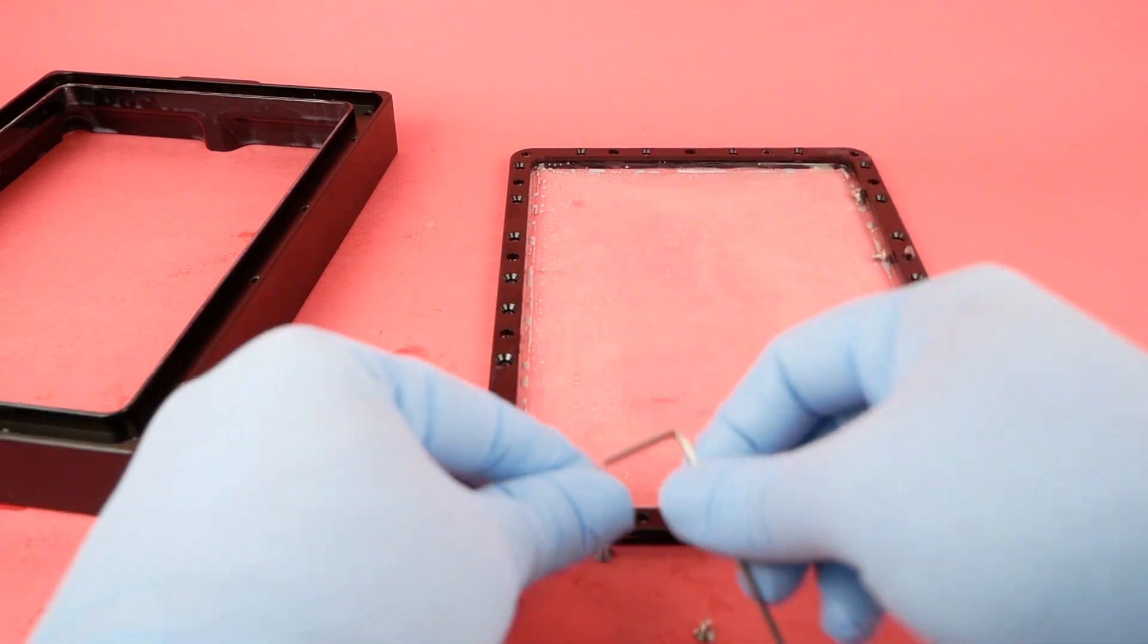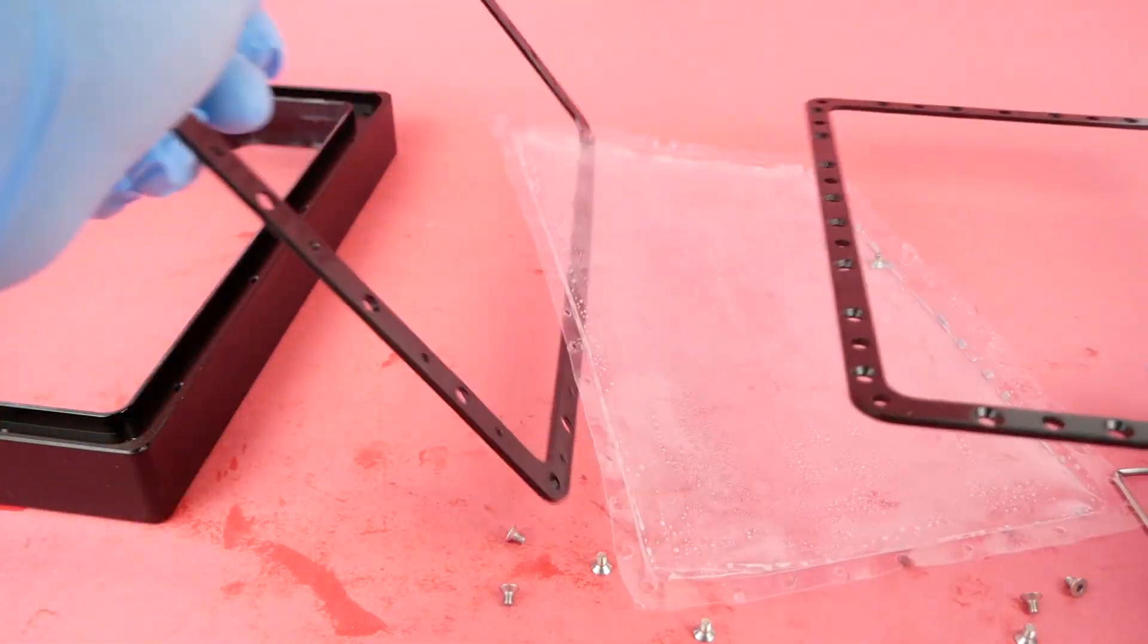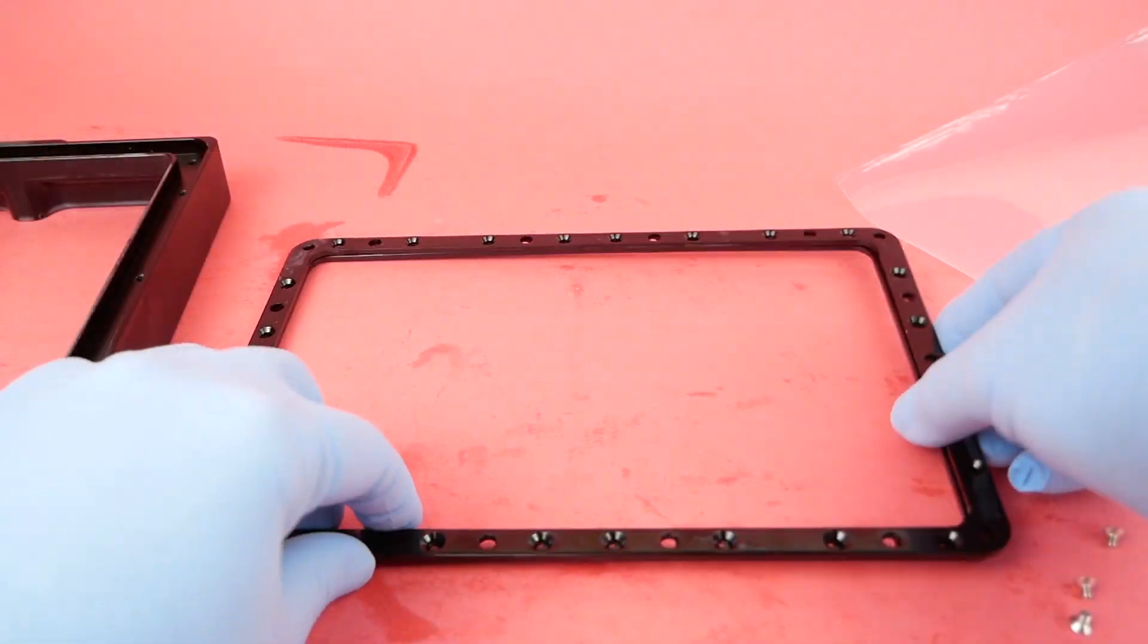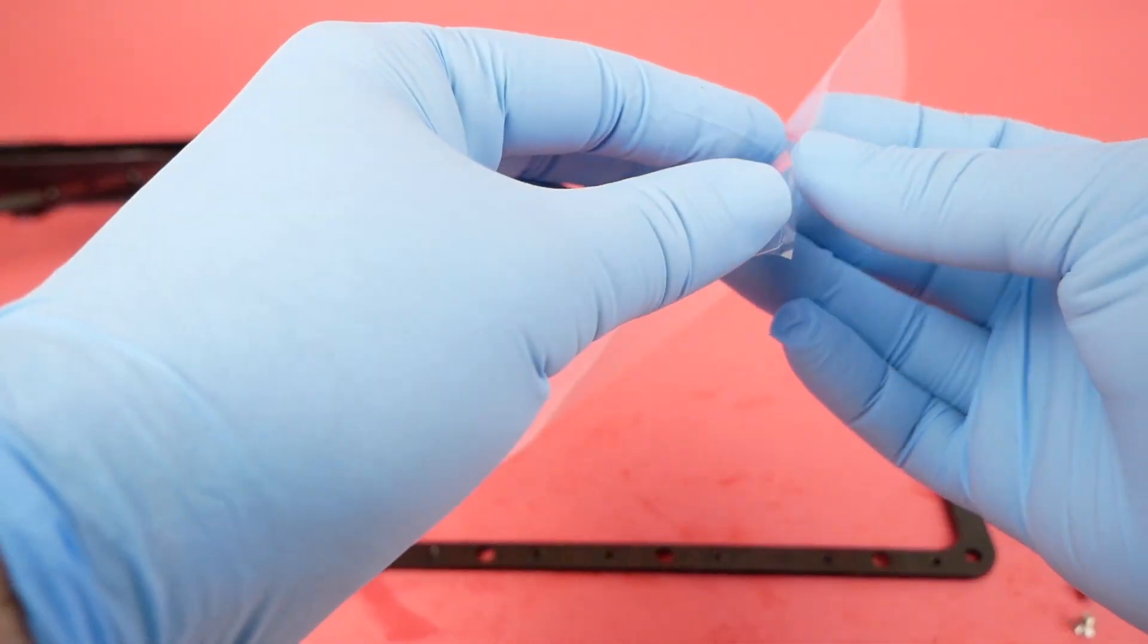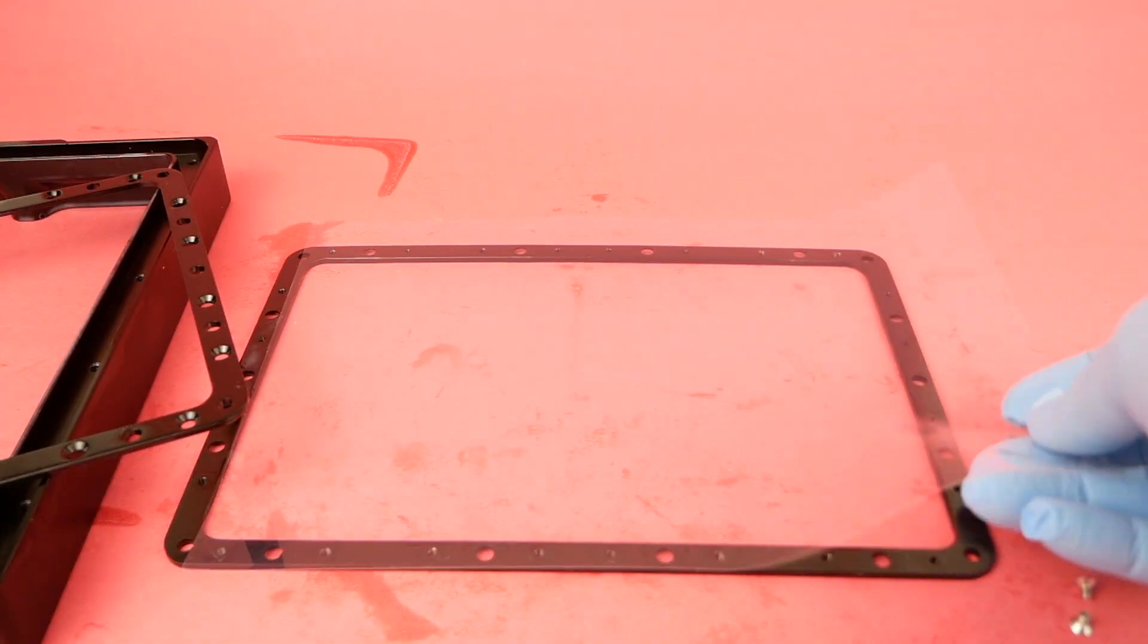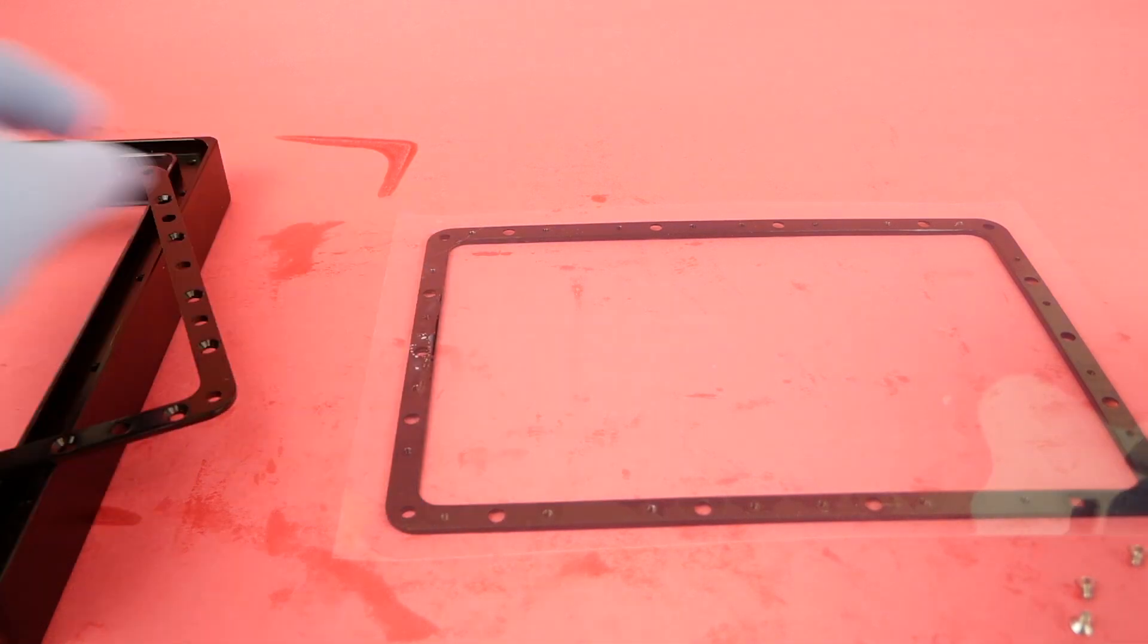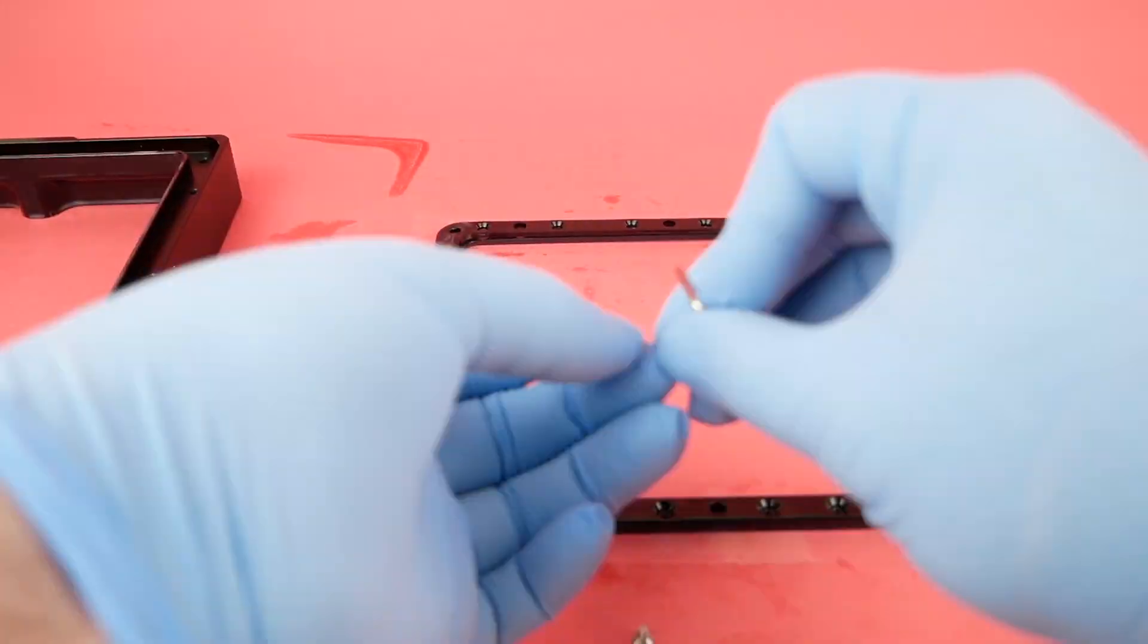So once you've got all of the bolts removed, you can just take out the film here and replace it with a new one, removing the protective film from both the top and the bottom of the FEP film. And then just sandwiching it between these two metal frames. Now you do have to use the Allen wrench or something to kind of poke holes in the film where the holes for the bolts are, or else you can't really manage to get the bolts in there.